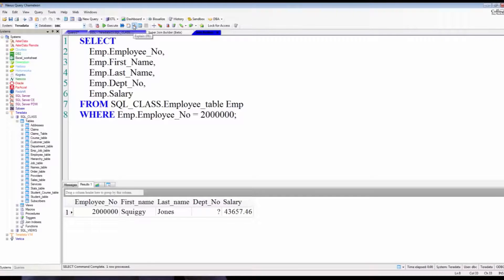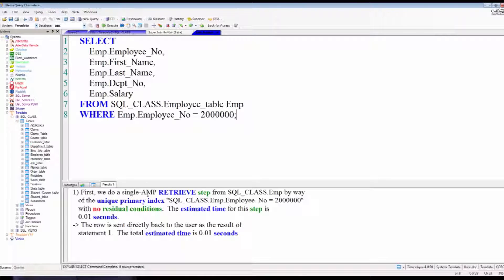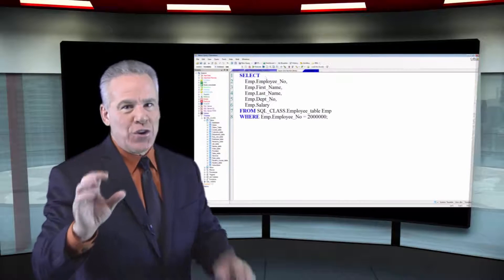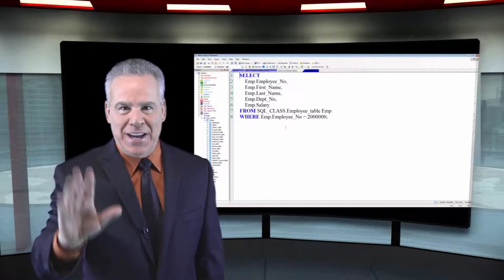When we ran the explain, it's going to say, this is a single amp retrieve by way of a unique primary index. That's the fastest query you can run on any Teradata system.